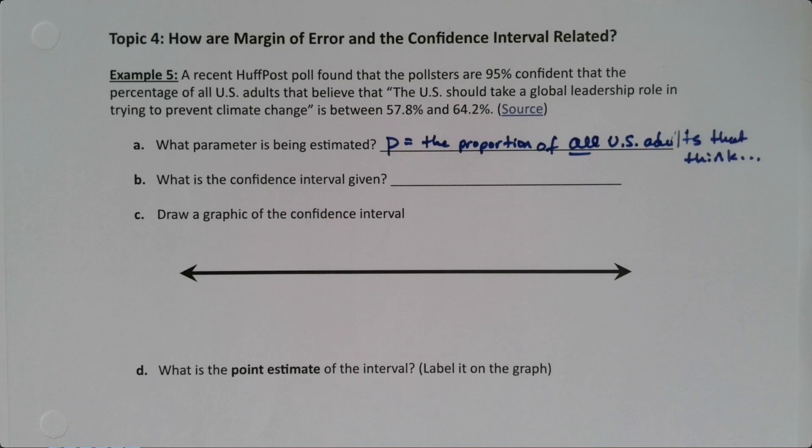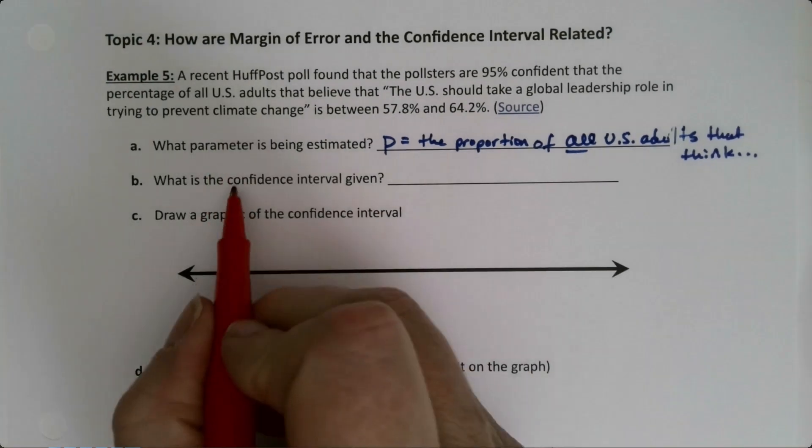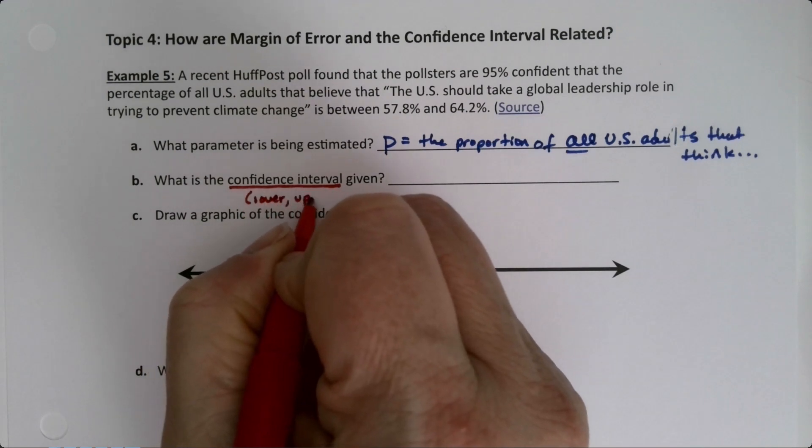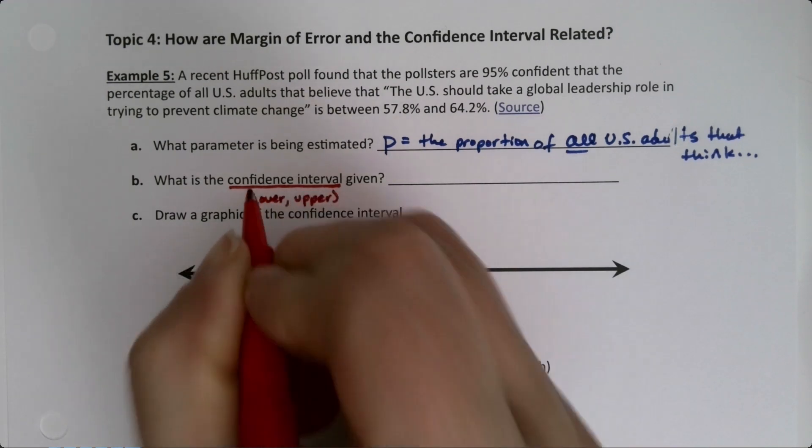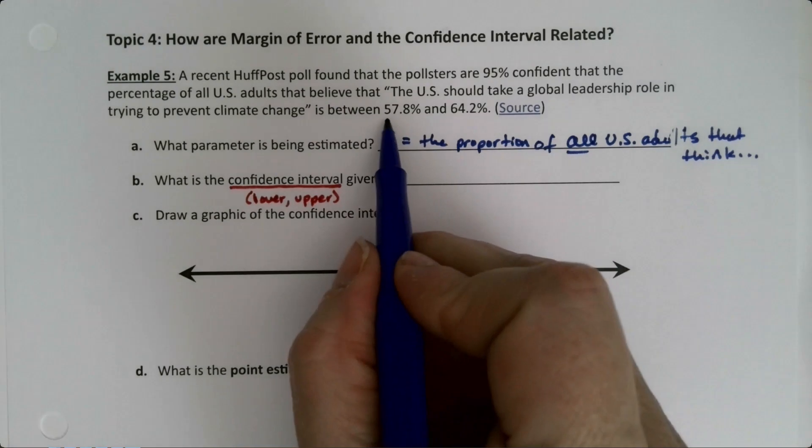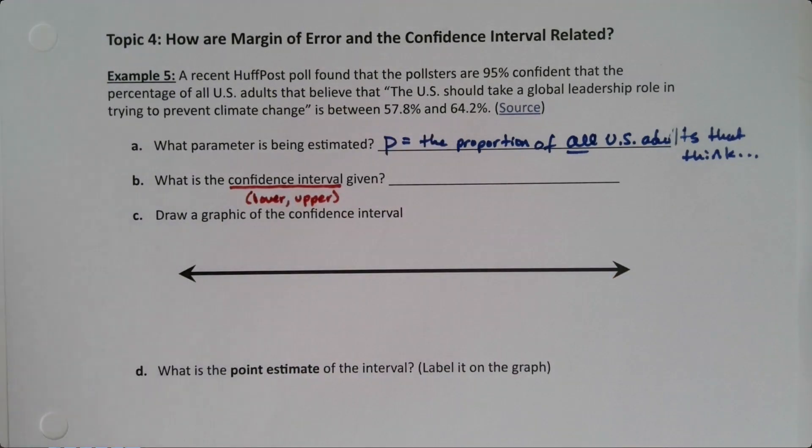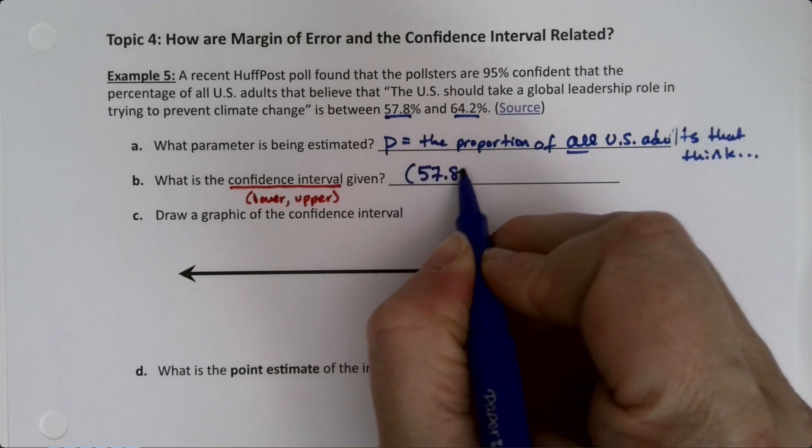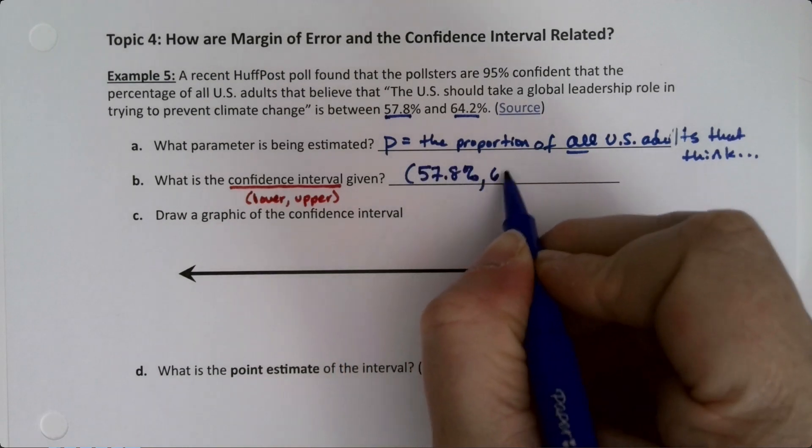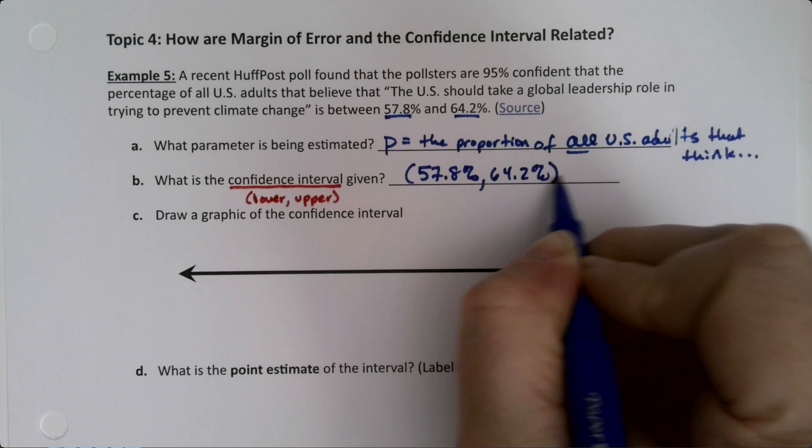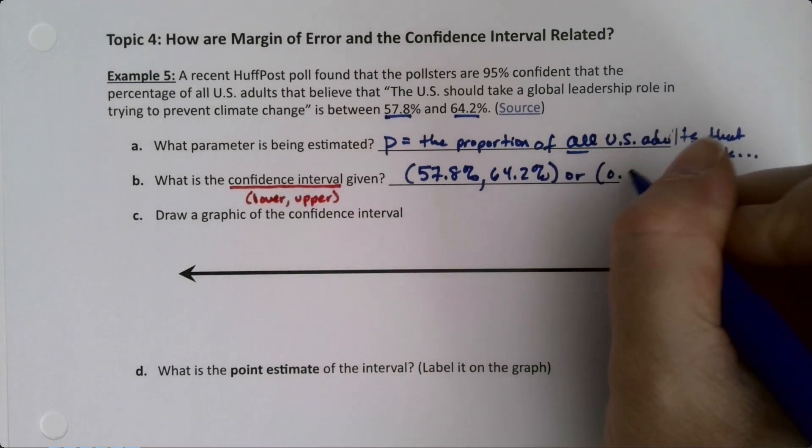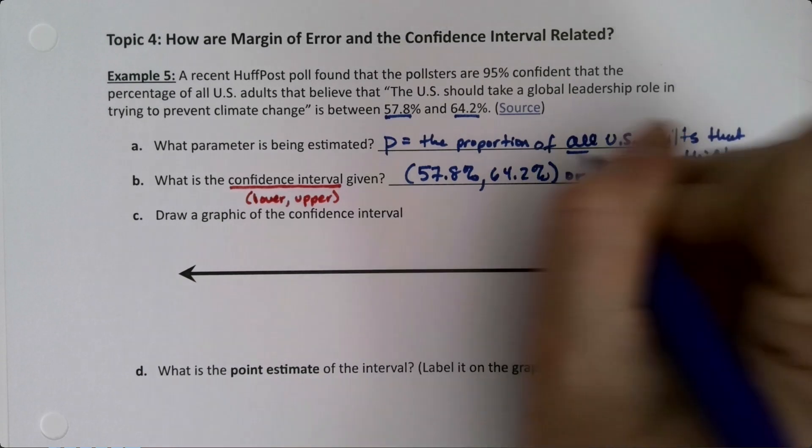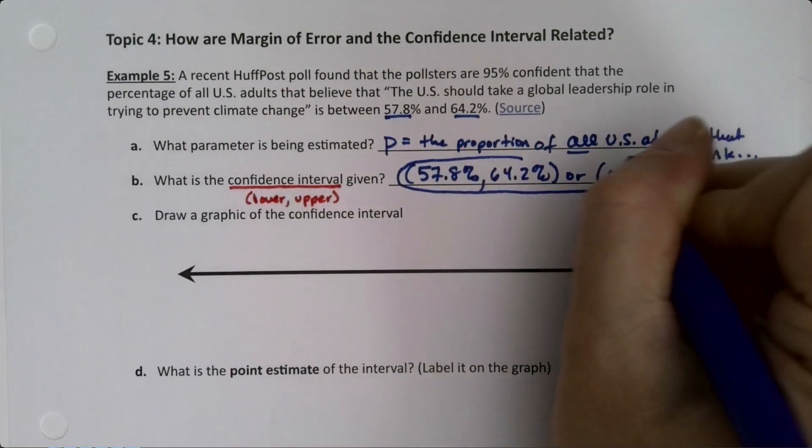Now what is the confidence interval given? A lot of students sometimes lose sight of this. The confidence interval is a lower and an upper—you get a lower number and an upper number, that's it. So it was given to you right here: the lower number and the upper number are right there, so 57.8% and 64.2%, or if you like you can say 0.578 and 0.642, tomato-tomato, either one is fine.